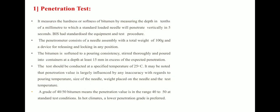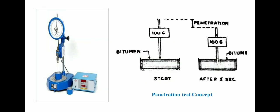The penetration test measures the hardness or softness of bitumen by measuring the depth in tenths of a millimeter to which a standard loading needle penetrates vertically in five seconds. The bitumen is softened to pouring consistency, stirred thoroughly, and poured into a container at a depth of at least 15 mm in excess of the expected penetration. The test is conducted at 25°C. A grade of 45/50 bitumen means the penetration value is in the range of 40 to 50 under standard test conditions.